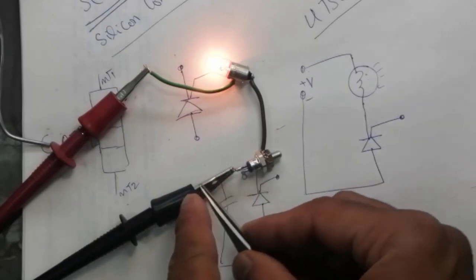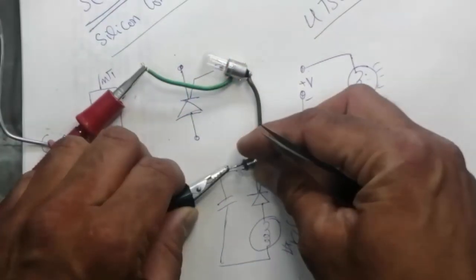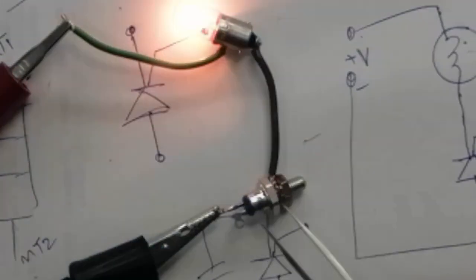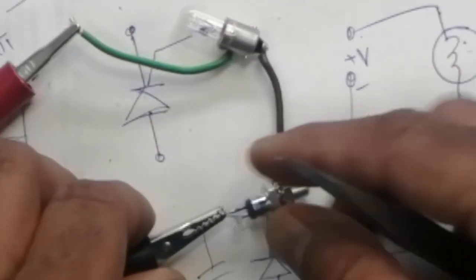Trigger voltage may be positive, may be negative. Any signal when it is available, we can see this signal or this signal. Any one trigger voltage.